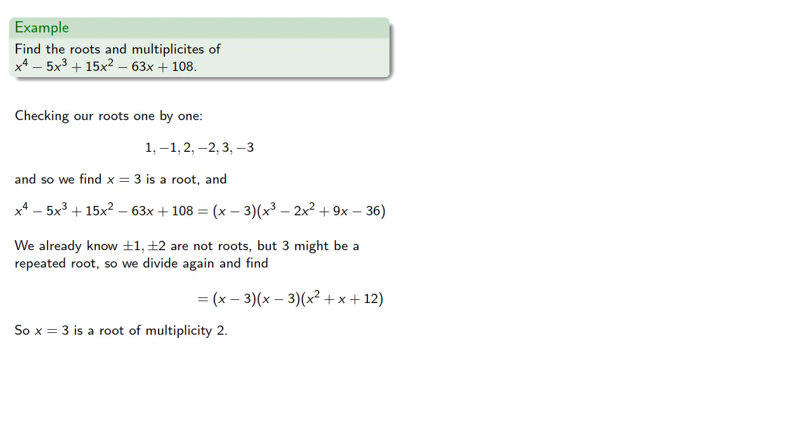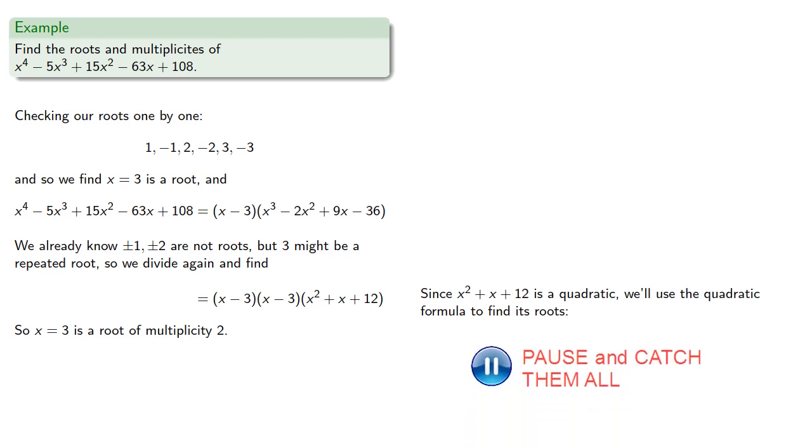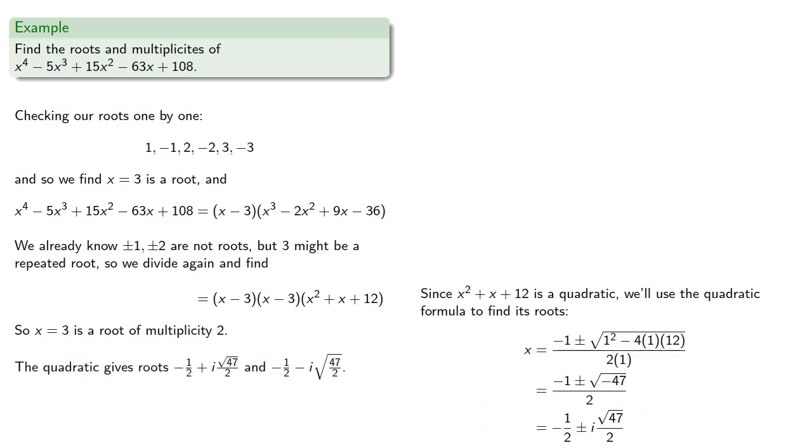While we could use synthetic division and the rational root theorem to try and find additional rational roots, since x squared plus x plus 12 is a quadratic, we'll use the quadratic formula. And so the quadratic gives roots of negative 1 half plus i root 47 halves and negative 1 half minus i root 47 halves. And since the factor corresponding to these roots was raised to the first power, these roots have multiplicity 1.